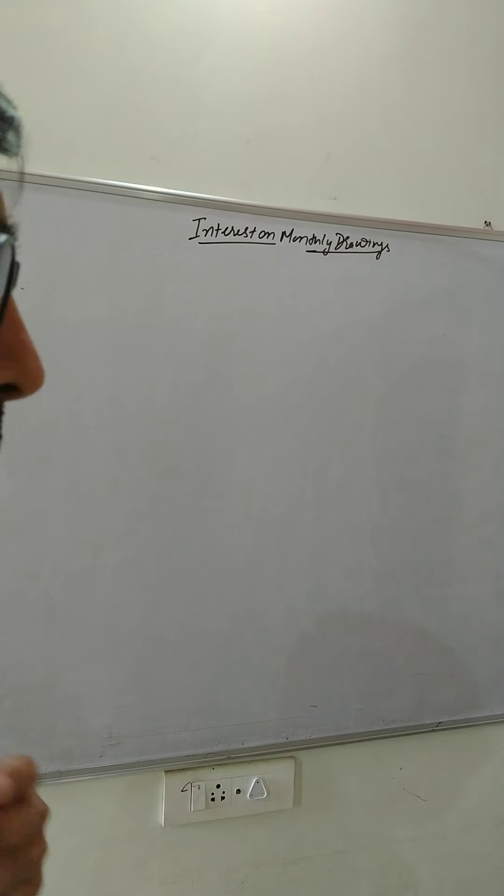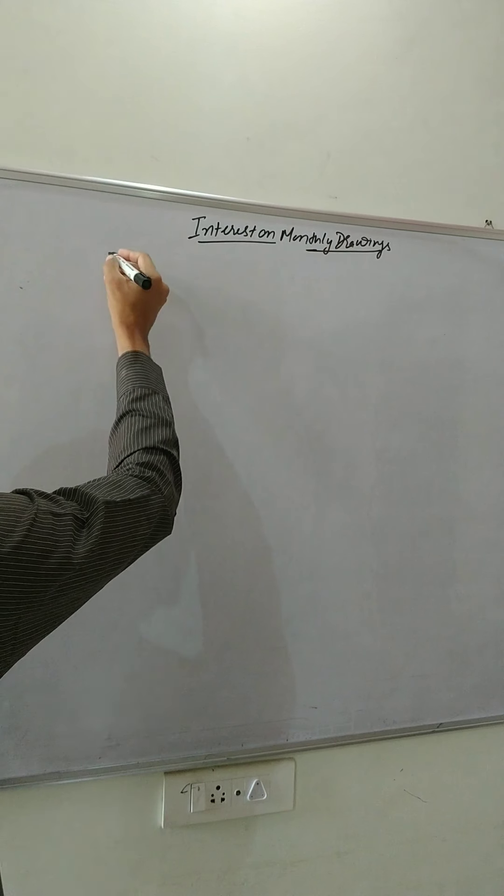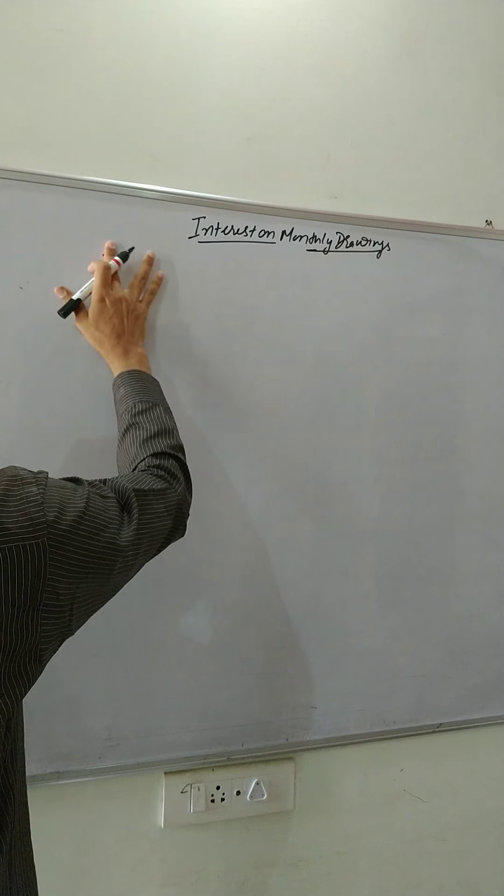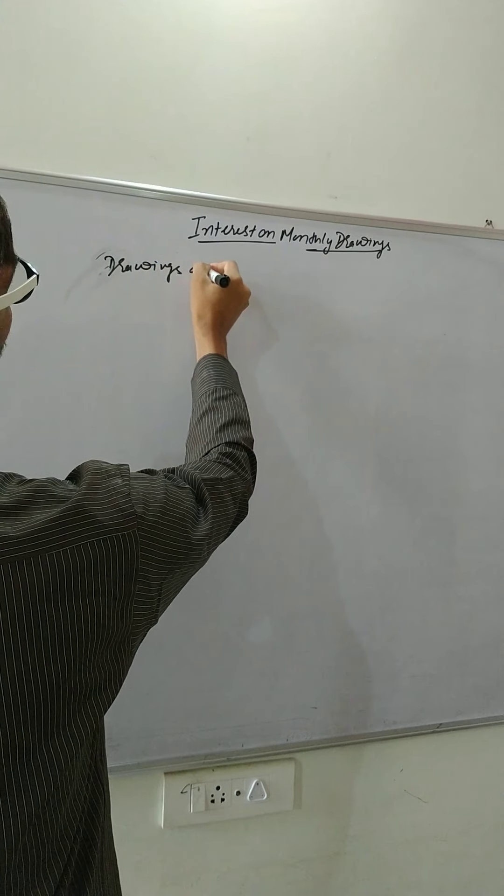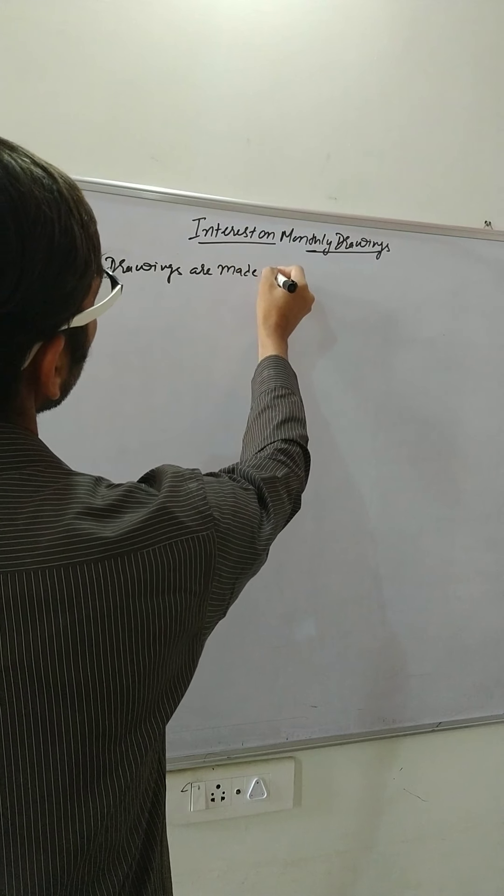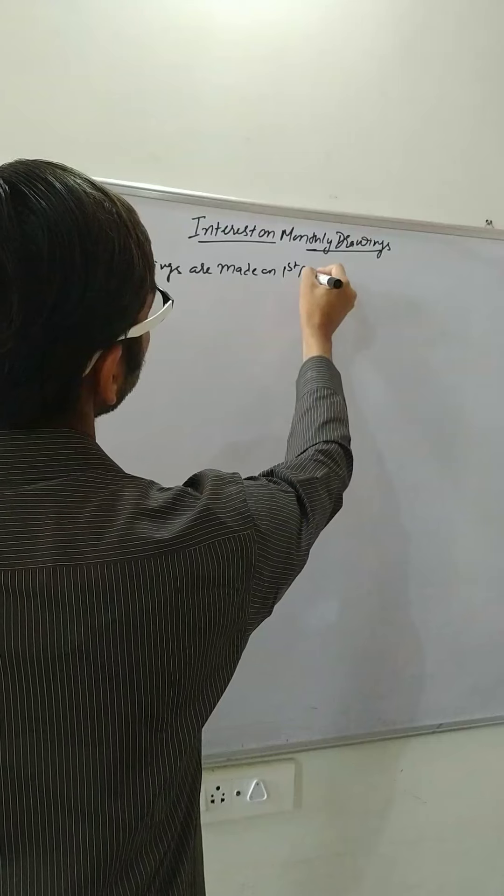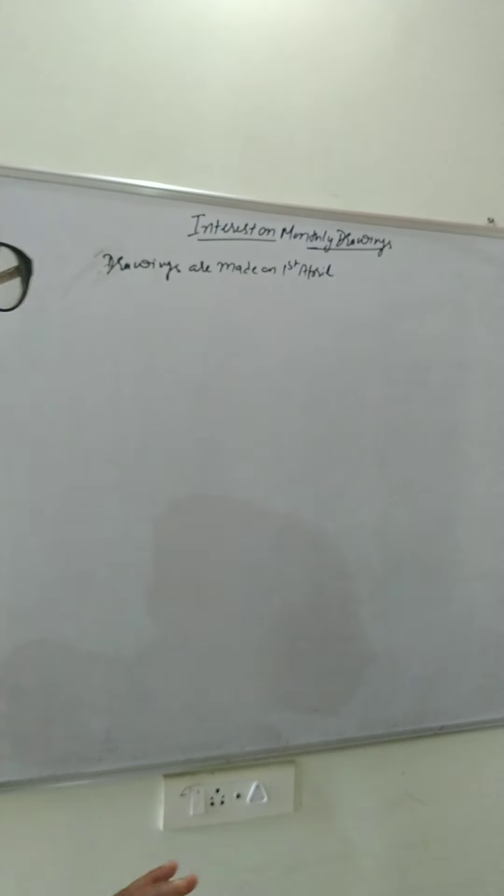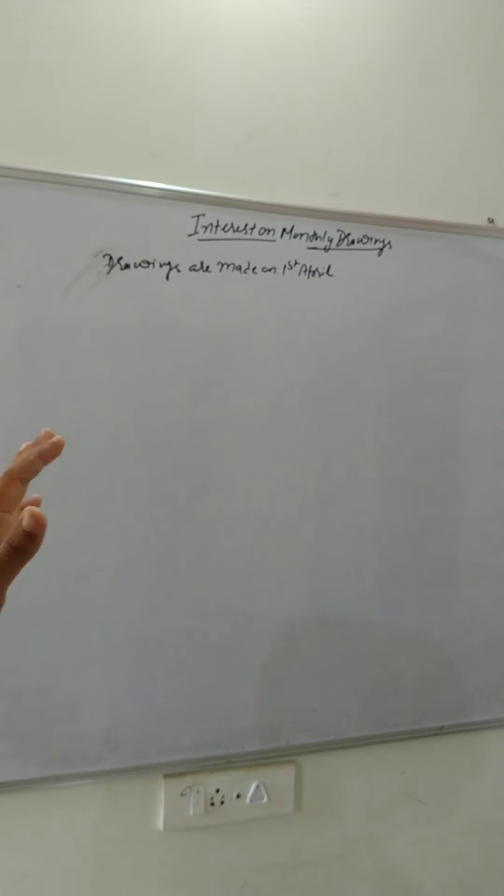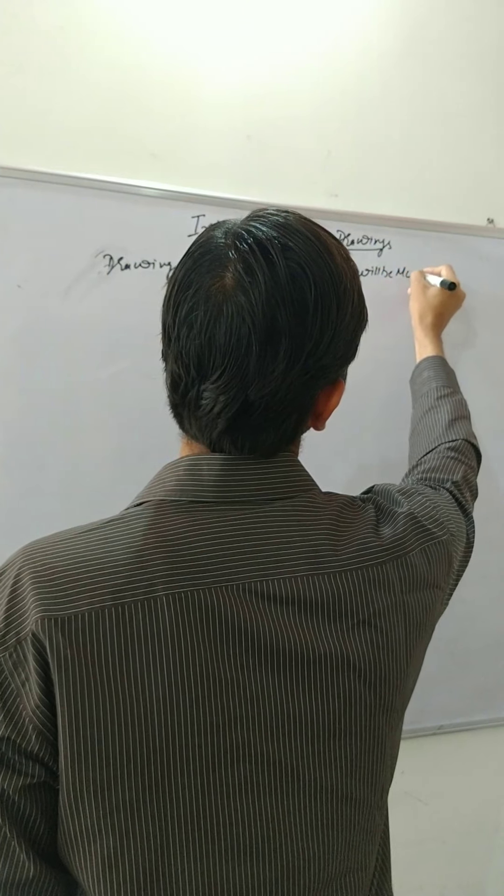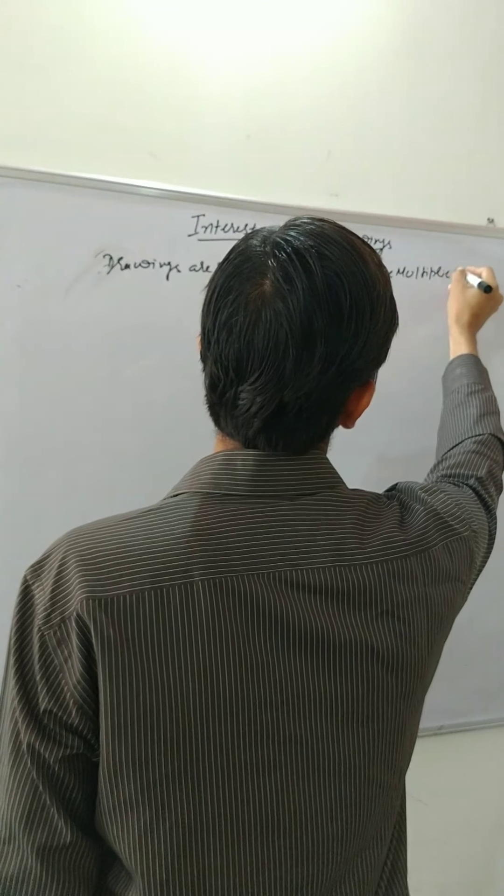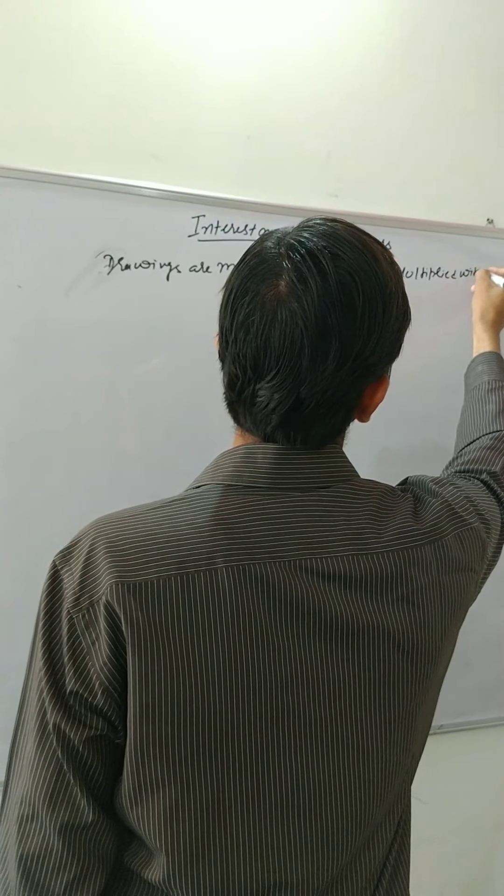And what that product method says? Supposingly, if the drawings are made on 1st April, then that drawings will be multiplied by 12 months because 12 months are remaining.